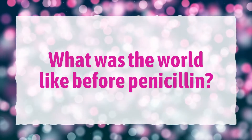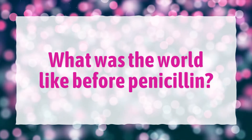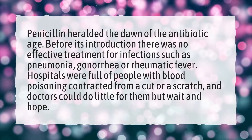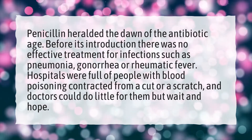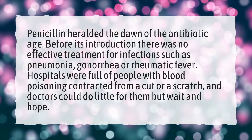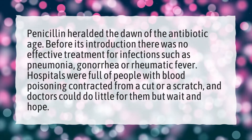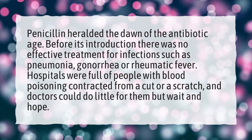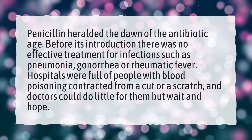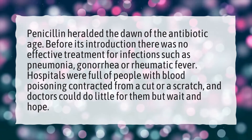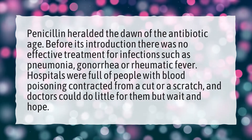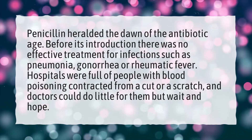What was the world like before penicillin? Penicillin heralded the dawn of the antibiotic age. Before its introduction, there was no effective treatment for infections such as pneumonia, gonorrhea, or rheumatic fever. Hospitals were full of people with blood poisoning contracted from a cut or a scratch, and doctors could do little for them but wait and hope.